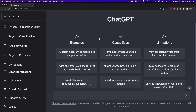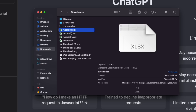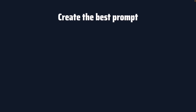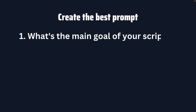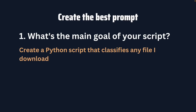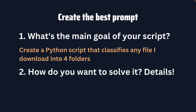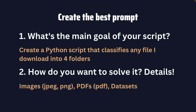The first part of this project is building a script that automatically classifies our files in our folder. To create the best prompt for an automation project, we have to answer a few questions. First, we have to know what's the main goal of our script — in this case, to classify a file that is in our downloads folder. Then we have to specify how we want to solve this project, adding as many details as possible, like listing the name of the folders and specifying the extensions. Answering these questions will help ChatGPT generate better scripts, and you won't have to waste hours fixing its mistakes.